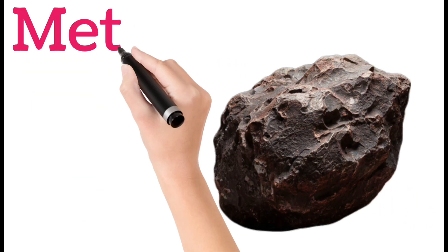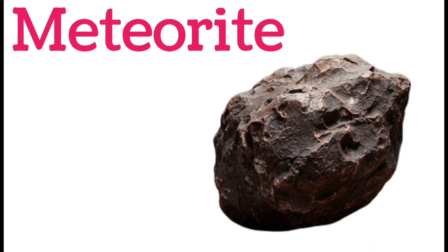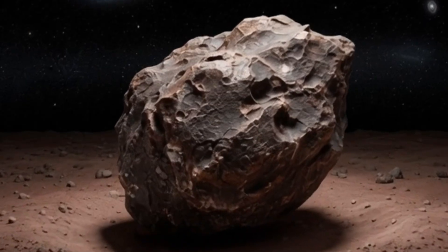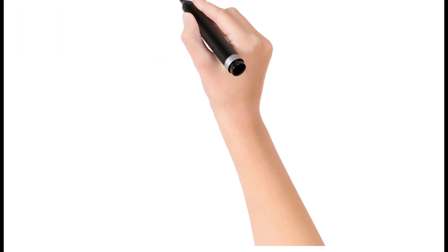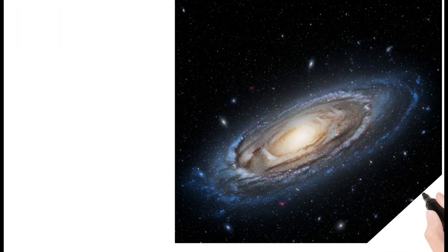Next, Meteorite. A meteorite reaches Earth's surface. It survives atmospheric burning. Meteorites help study space history. They are rare and valuable.